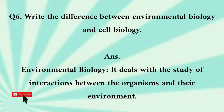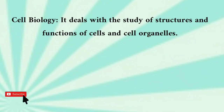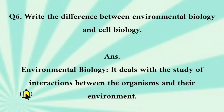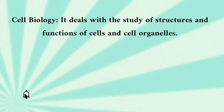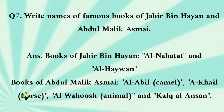Write the difference between environmental biology and cell biology. Environmental biology: it deals with the study of interactions between the organisms and their environment. Cell biology: it deals with the study of structures and functions of cells and cell organelles. Maholiyati hayatiyat aur cell hayatiyat ke darmiyan farq likho. Maholiyati hayatiyat: ye hayatiyat aur unke mahol ke maabein taamilat ke mutala hai. Cell biology: ye khaliyat aur cell ke dhanche aur afhaal ke mutala hai.